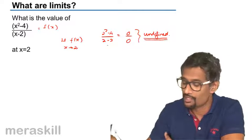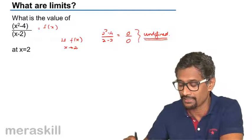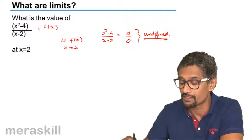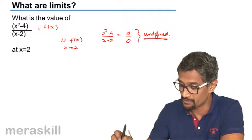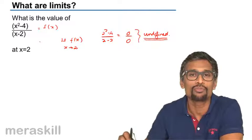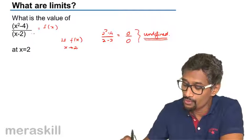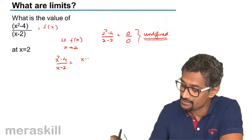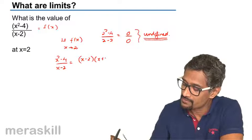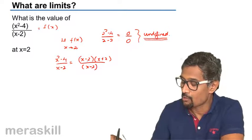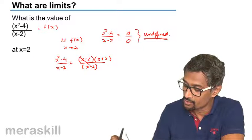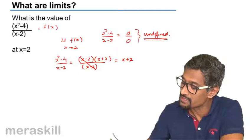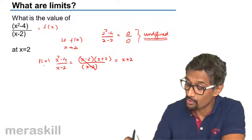One way is to take values very close to 2, like 1.999 or 2.001, find the function's value, and observe the trend. But that involves a lot of calculation. Another way is to simplify: x squared minus 4 upon x minus 2 can be written as x minus 2 times x plus 2 upon x minus 2. The common factor x minus 2 cancels, leaving the determinate function x plus 2.